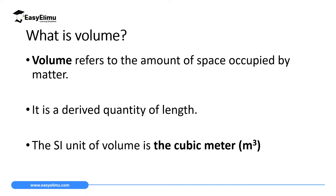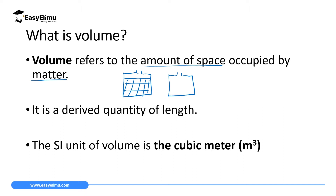So what is volume? Volume refers to the amount of space occupied by matter. If you have three containers — the first contains a solid, the second contains a liquid, and the third contains a gas (which spreads all over the container because a gas occupies the entire space in which it is confined) — we have solid, liquid, and gas: the three states of matter. We are interested in finding the amount of space occupied by this matter.